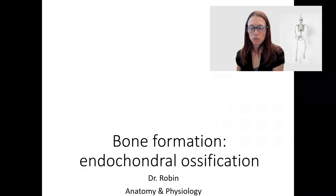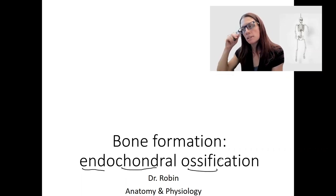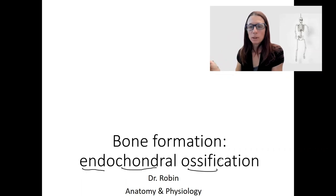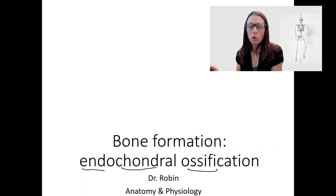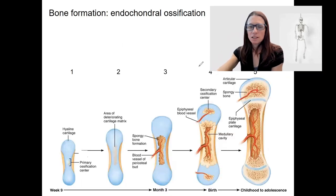The other type of bone formation or ossification is endochondral ossification. This is the model where cartilage is being replaced by bone — ossification occurs inside the cartilage. This begins at eight weeks post-conception and occurs in all the bones of the body besides the skull and clavicle, which will use this method of bone formation.